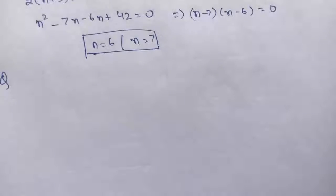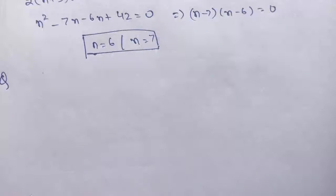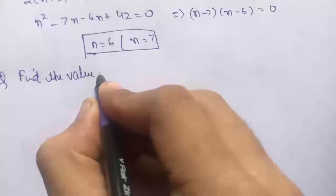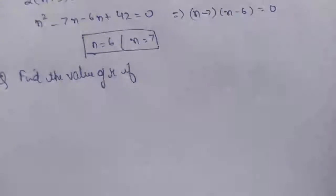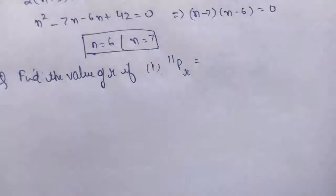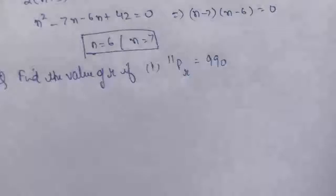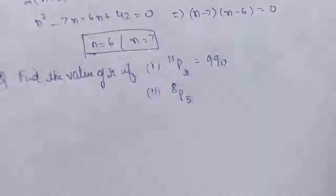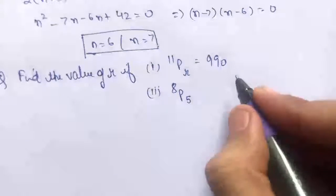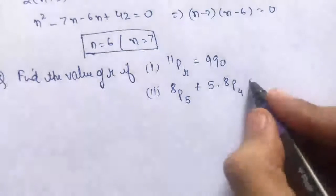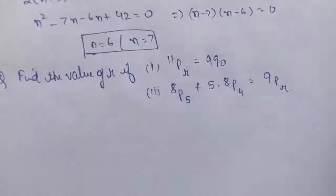There are a few homework questions based on the same concept. First: find the value of r if 11Pr = 990. Second: 8P5 + 5×8P4 = 9Pr, find r. These two questions are your homework.